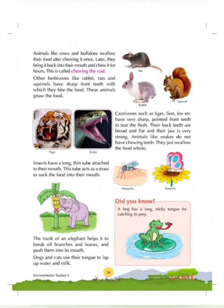Carnivores such as tiger, lion and fox have very sharp pointed front teeth to tear the flesh. Their back teeth are broad and flat and their jaw is very strong. They have lots of canines in their mouth — canines are very sharp teeth. Their back teeth are broad and flat so that they can chew the food properly.